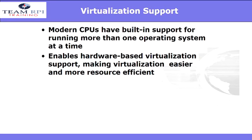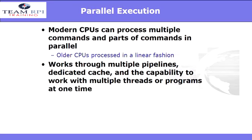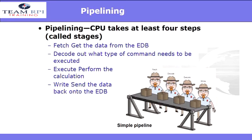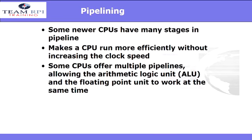Modern CPUs can process multiple commands at the same time. This is important because old CPUs had to work in a linear fashion. This is made possible through multiple pipelines, dedicated cache, and the capability to work with multiple threads or programs at one time. The pipeline stages the CPU takes — the four basic stages are fetch, decode, execute, and write. Newer PCs have many stages in the pipeline, which allows them to work more efficiently without increasing the clock speed and damaging the computer.